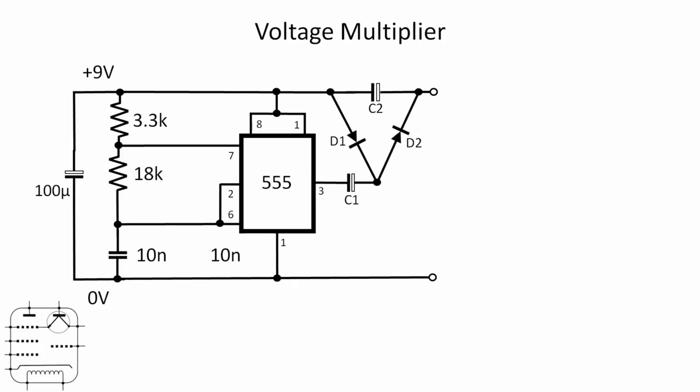And the way it works essentially is that whilst the 555 output on pin 3 is low capacitor C1 charges through D1. As the output of the 555 goes high it effectively begins to double the charge on the left hand side of C1. That higher voltage then flows through D2 and charges up C2 to twice the voltage.